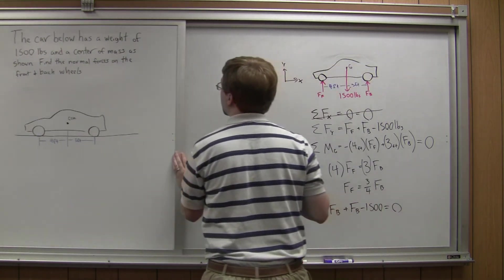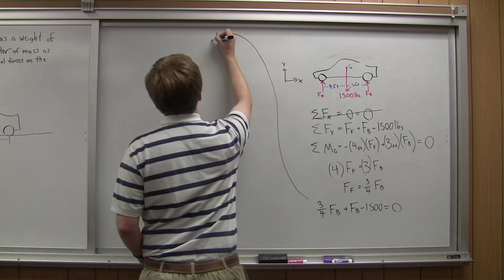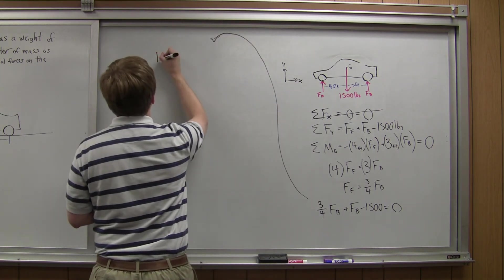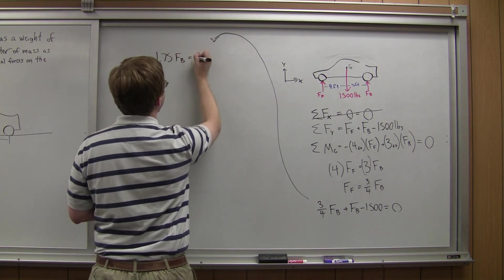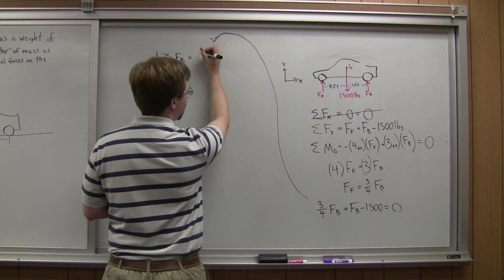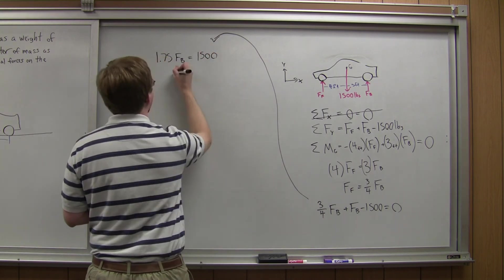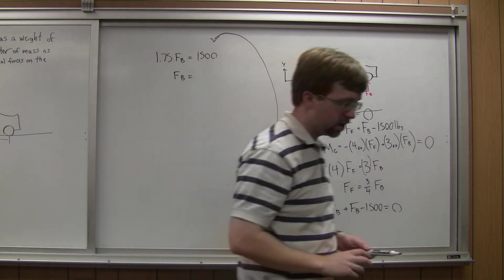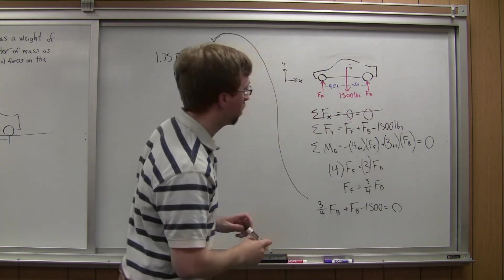Push this aside, give myself a little more room. So if I bring this up over here, I'm going to have 1.75 Fb equals 1,500. Solve that out. Fb will end up being equal to 857.14.